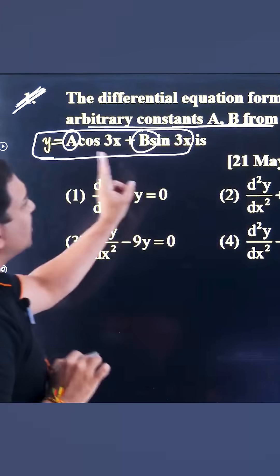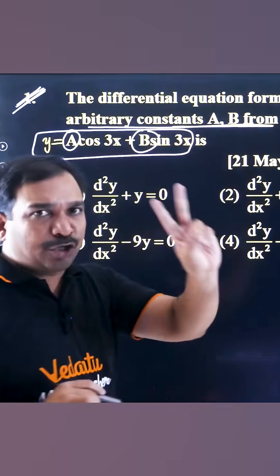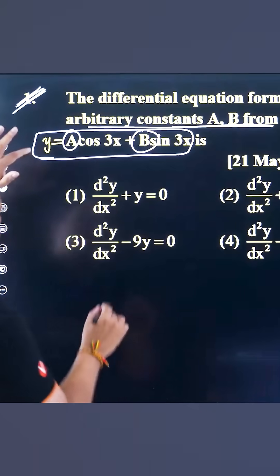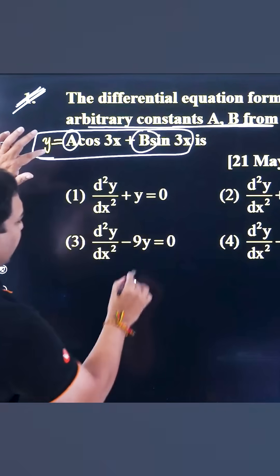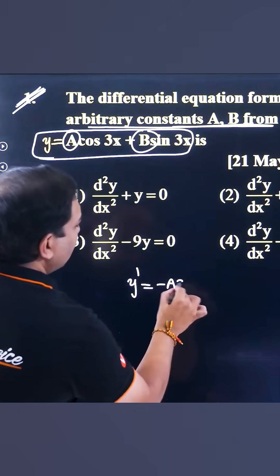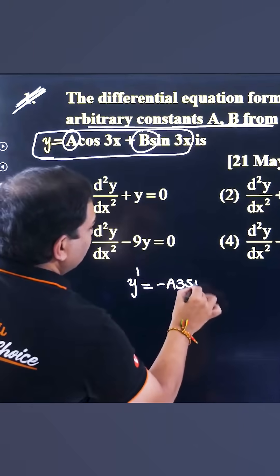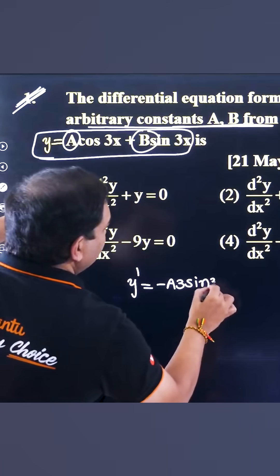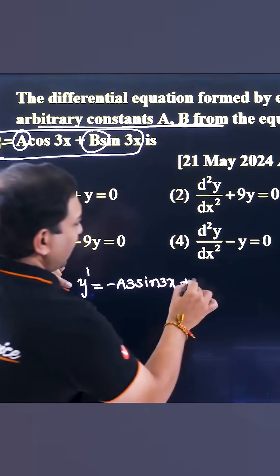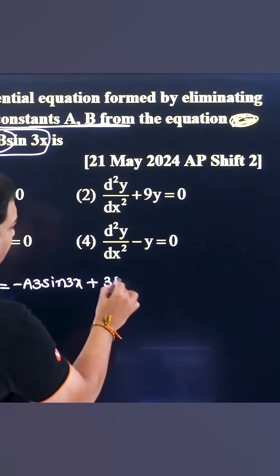Since a and b are arbitrary constants, we have to differentiate two times. First differentiation: y dash equals a into cos 3x, minus 3 sin 3x, plus b into sin 3x, 3 cos 3x.